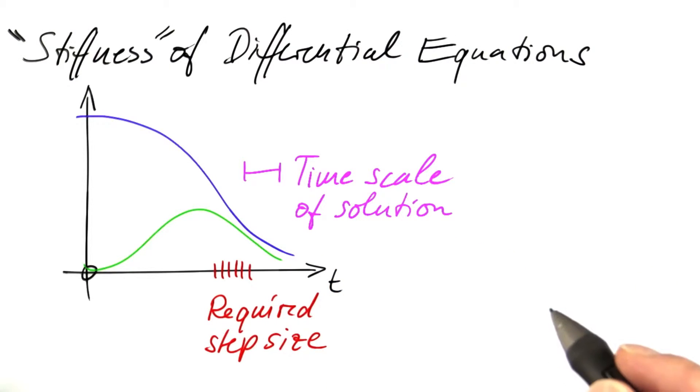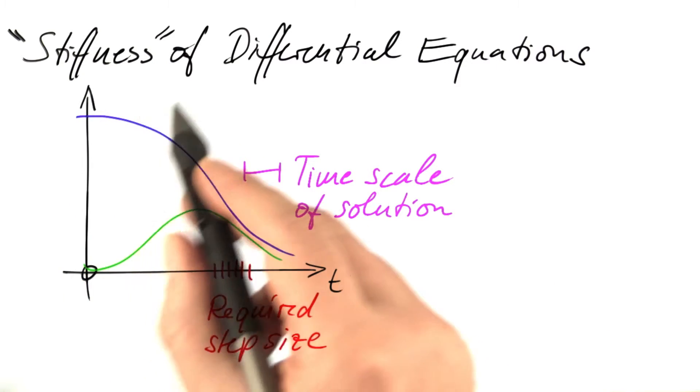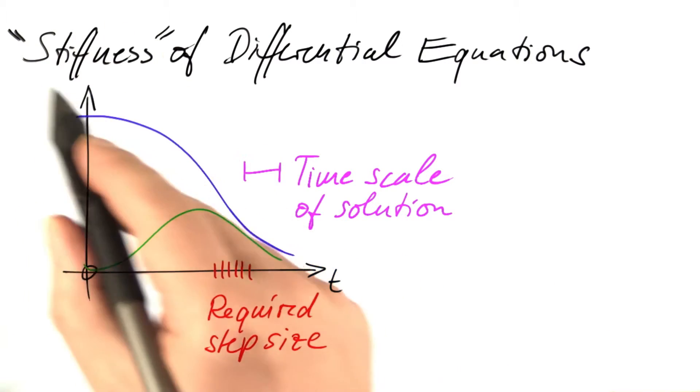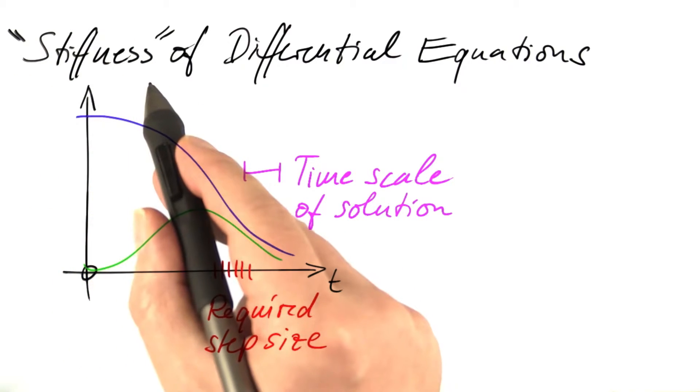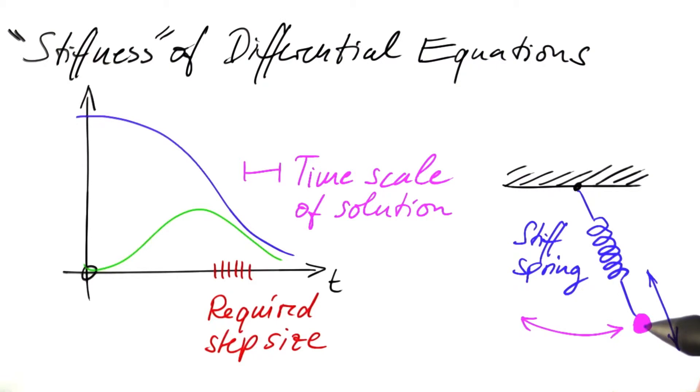It's annoying if we are forced to use a very small step size, even though the solution develops on much longer time scales. There is no generally accepted definition of what stiffness precisely means, but if you think about this situation, you may get an idea about where the term comes from.